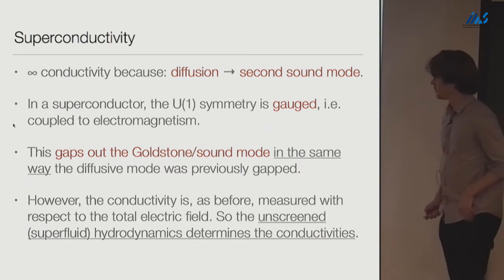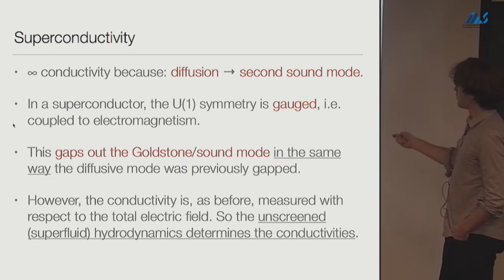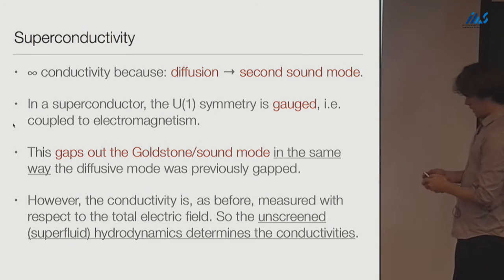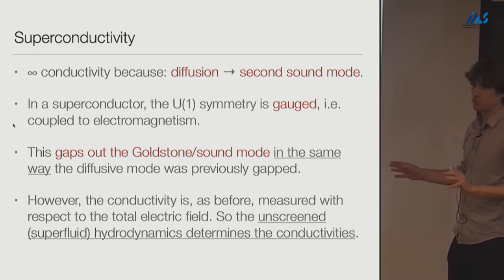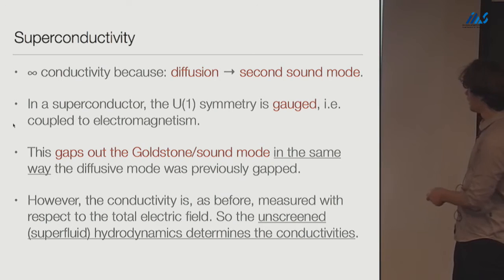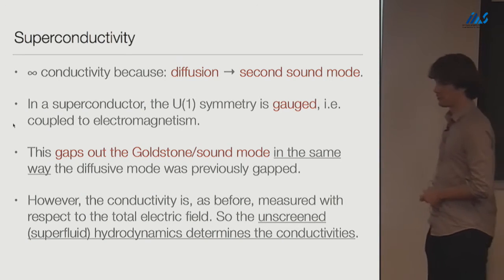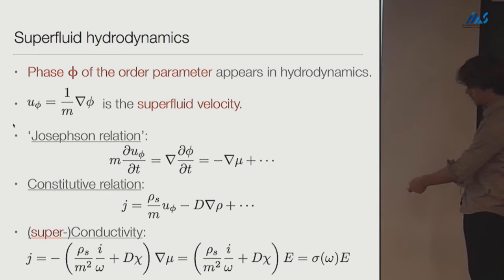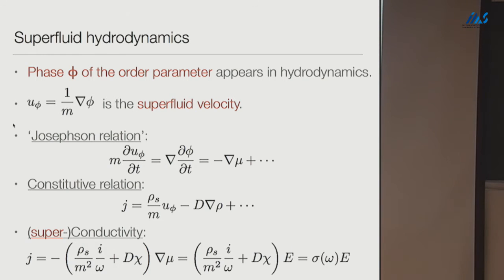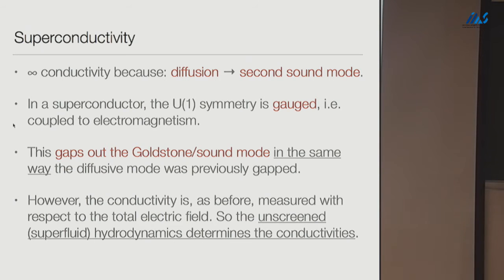The infinite conductivity arises because diffusion has been replaced by the second sound mode — the motion of the supercurrent. In a superconductor the U(1) symmetry is gauged, so it couples to electromagnetism, which gaps out the Goldstone via the Higgs mechanism — exactly analogous to the diffusive mode getting gapped before. The conductivity is still measured with respect to the total electric field, so the unscreened superfluid hydrodynamics correctly gives infinite conductivity at zero frequency without needing to include gauge fields.